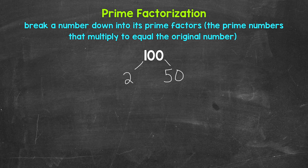Now keep in mind, there are other factors we could have started with here. For example, 4 and 25, and there are other options as well. These will all work. Depending on the number, there can be multiple different factors we can use, so there can be multiple ways to do these. But in the end, we will get to the same prime numbers — and that's what's important.